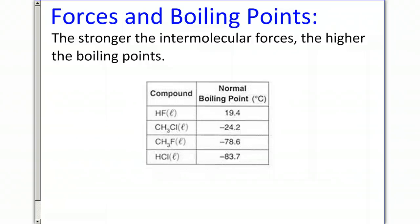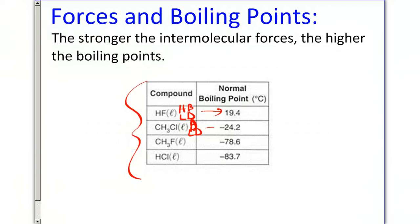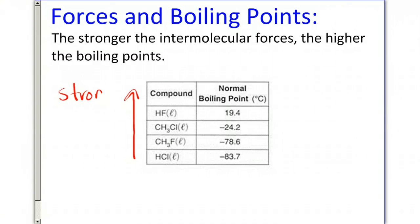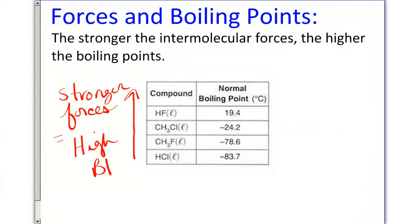Regarding forces and boiling points: the stronger the intermolecular force, the higher the boiling point. Looking at our chart, the top molecule has hydrogen bonding plus London dispersion forces, giving it a very high boiling point. The next one is polar but has no hydrogen bonding, so it has dipole-dipole and London dispersion forces — a lower boiling point. As we go down the chart, they have weaker and weaker intermolecular forces and progressively lower boiling points.